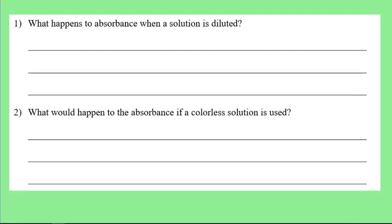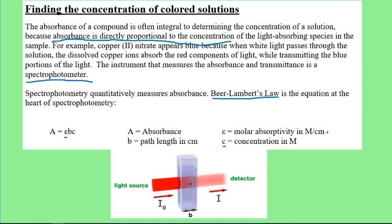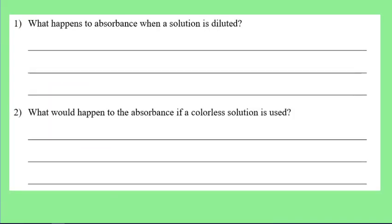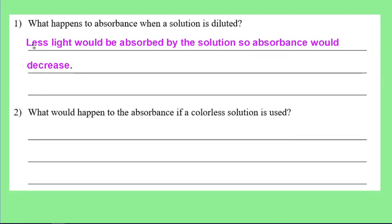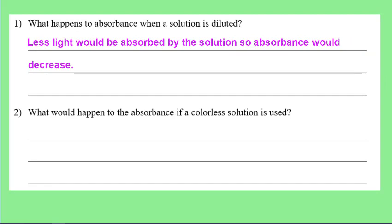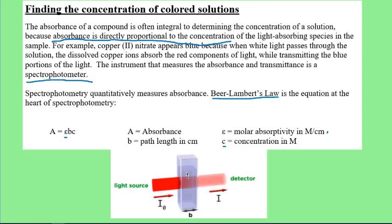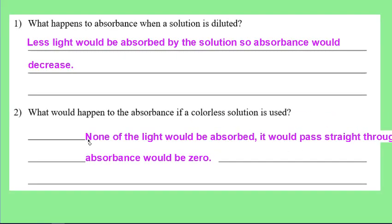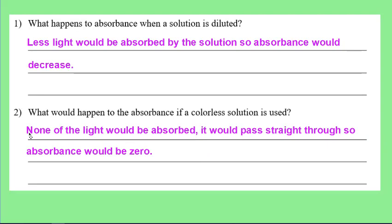What happens to absorbance when a solution is diluted? With a weaker solution, less light is absorbed by the particles, so absorbance decreases. What would happen to absorbance if a colorless solution is used? The particles have to block the light — if the solution is colorless, the light will just pass right through and none will be blocked. This would be a useless technique for something like sodium chloride: all readings would be zero, so absorbance would be zero.